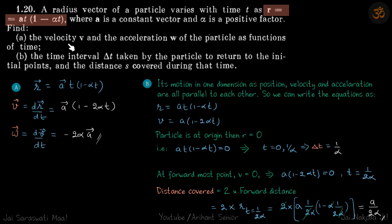So let's do the easy part first: find the velocity vector and the acceleration vector. Since r vector is given and a vector is constant, we can just differentiate it to get the velocity vector and differentiate it again to get the acceleration vector.